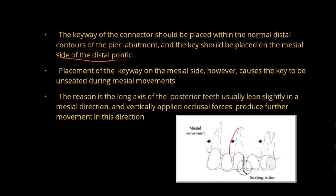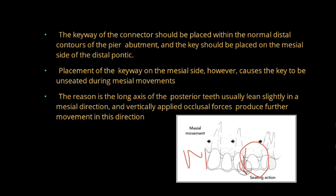This is important. Here you can see this is your pier abutment. So your keyway will be on the distal part of this pier abutment, whereas your key will be on the mesial side of your distal pontic. This is the mesial side; this is the distal side. So the mesial side of the distal pontic has your key.